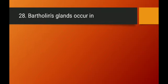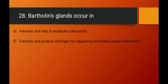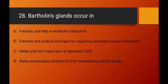Question number twenty-eight: Bartholin's glands occur in which organism and what is their function? Bartholin's glands are found in the female reproductive tract and help in vestibular lubrication. The vestibule is the depression found in the female reproductive tract. Option A — females, helping in vestibular lubrication — is the right answer.